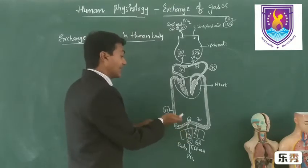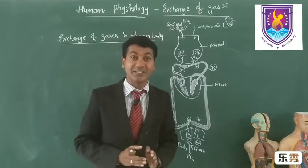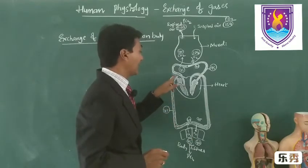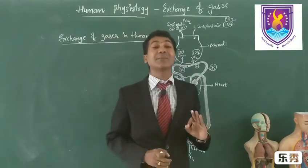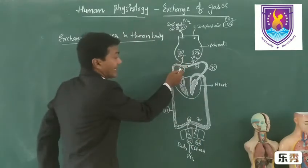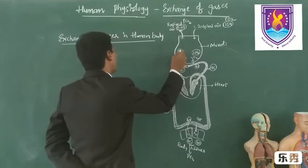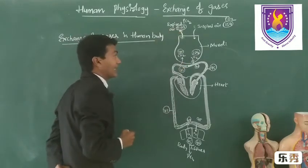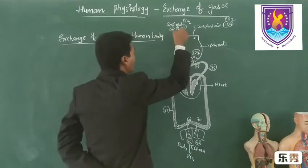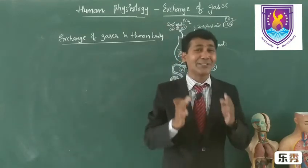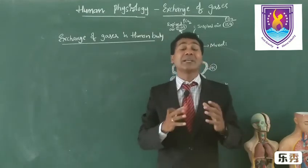Once carbon dioxide enters the capillaries, the deoxygenated blood carries it at 45 mmHg pressure of carbon dioxide. This carbon dioxide travels through the heart and reaches the alveolus. The alveolus possesses only 40 mmHg partial pressure of carbon dioxide, which is less than the capillaries, so carbon dioxide moves from capillaries to the alveolus. The alveolus contains 40 mmHg, whereas atmospheric air contains only 0.03 mmHg of carbon dioxide, so carbon dioxide moves from the alveolus to the environment. This is the entire journey of oxygen from the environment to tissues and carbon dioxide from tissues to the environment by the process of diffusion.